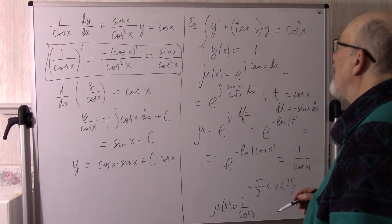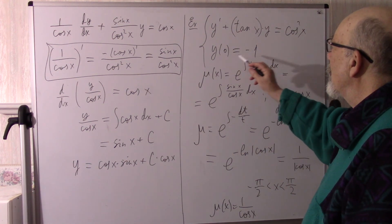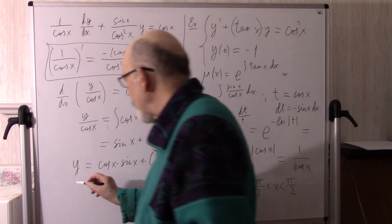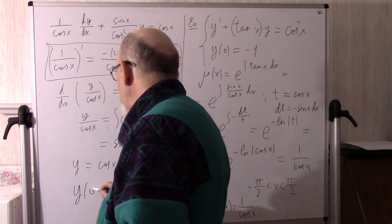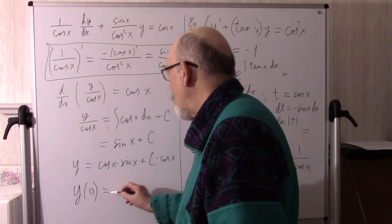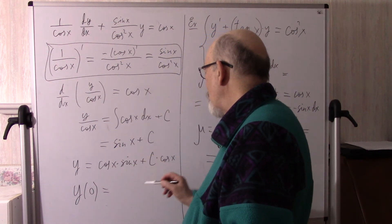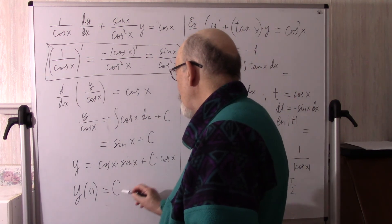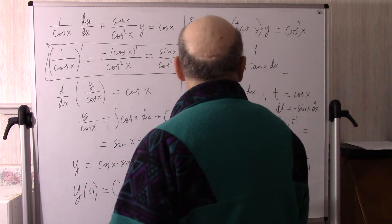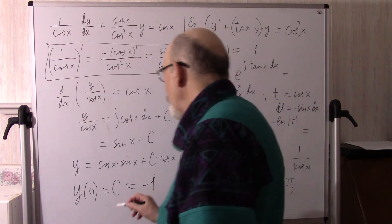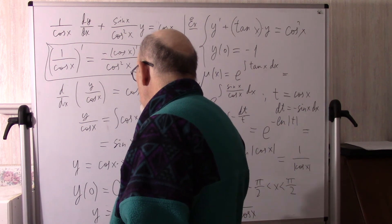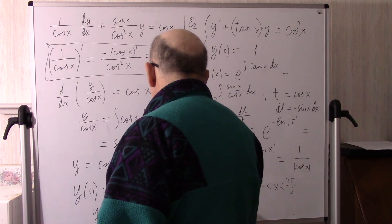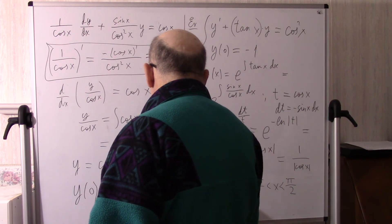Now we have to find c such that this initial condition is satisfied. We write y(0): cos(0) is 1, sin(0) is 0, so there is 0, plus c times cos(0) which is c. And it should equal minus 1. So c equals minus 1, and y equals cos(x)·sin(x) minus cos(x). This is the answer.